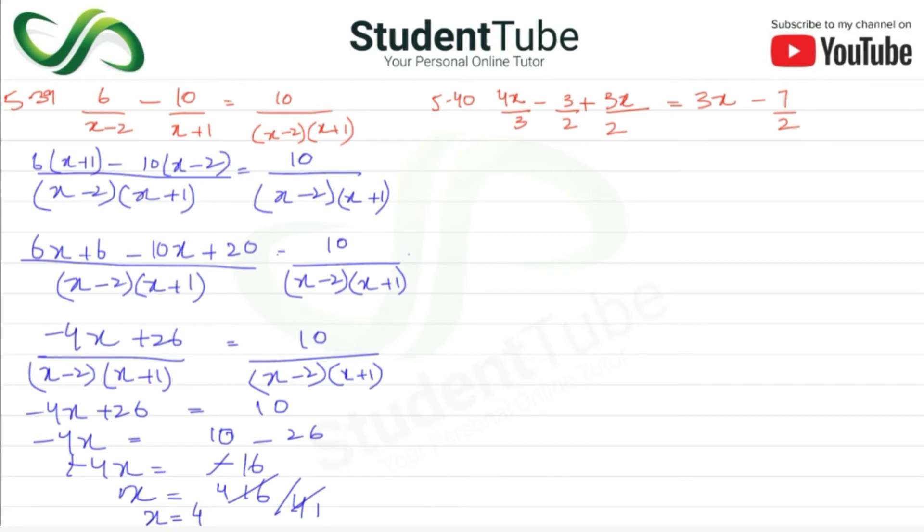Now question 5.40. In this we also take LCM. 3 ka LCM hai 7 lenge, 2 to 3, so 6. Then here 3, 3s are 9x plus 2. 2, 2, 3s are 6.